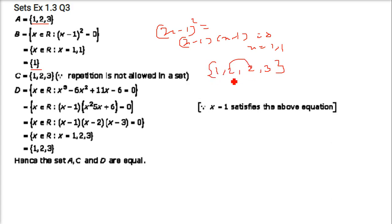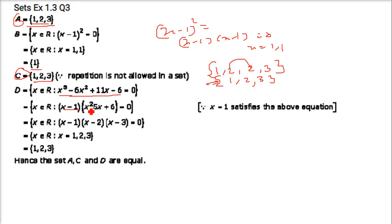We don't repeat elements, so C = {1, 2, 3}. A and C are equal. For D, x³ − 6x² + 11x − 6 = 0 factorizes as (x−1)(x−2)(x−3) = 0, giving x = 1, 2, 3. So D = {1, 2, 3}. Therefore A, C, and D are all equal.